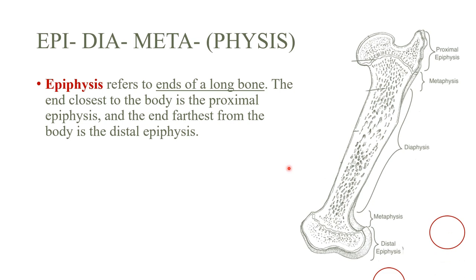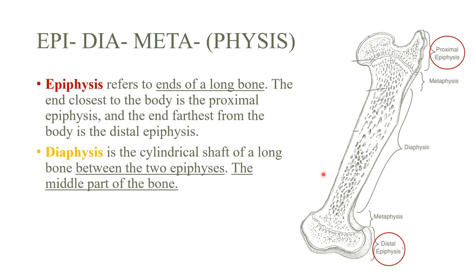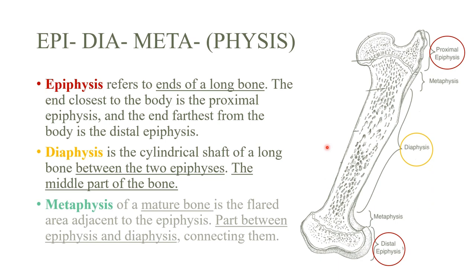The diaphysis is the cylindrical shaft — the middle or body of the bone. The metaphysis of a mature bone is the part that connects the epiphysis to the diaphysis. Think of it as a bridge or neck connecting the body (diaphysis) to both ends (epiphysis).